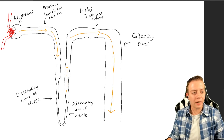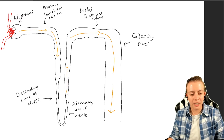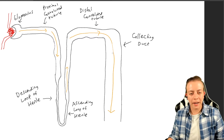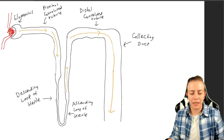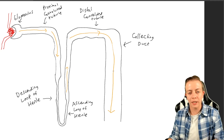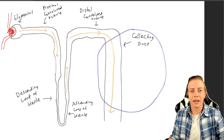The filtrate moves through the proximal convoluted tubule, down the descending loop of Henle, up the ascending loop of Henle, through the distal convoluted tubule, and then out the collecting duct. By the time it gets to the collecting duct, most of what you want to reabsorb has been reabsorbed. You do reabsorb some things in the collecting duct as well, but by the time it gets there it is essentially urine. When talking about spironolactone and diuretics, we're going to focus on the collecting duct.